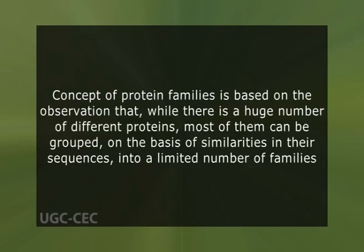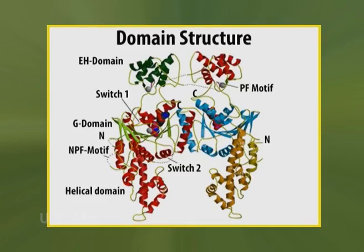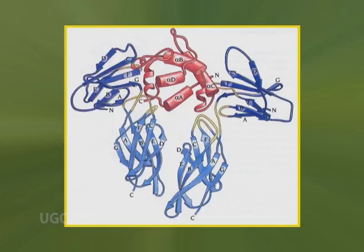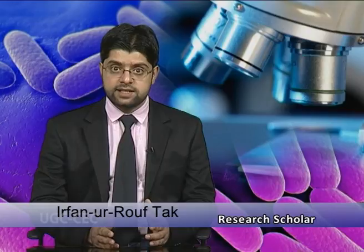The concept of protein families is based on the observation that, while there is a huge number of different proteins, most of them can be grouped on the basis of sequence similarities into a limited number of families. Proteins or protein domains belonging to a particular family generally share functional attributes and are derived from a common ancestor. Some regions have been better conserved than others during evolution — these regions are generally important for the function of a protein and the maintenance of its three-dimensional structure. By analyzing the constant and variable properties of such groups of similar sequences, it is possible to derive a signature for the protein family or domain which distinguishes its members from all other unrelated proteins. That concludes today's lecture — thank you very much and goodbye.